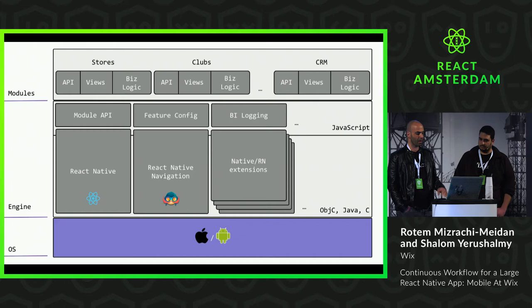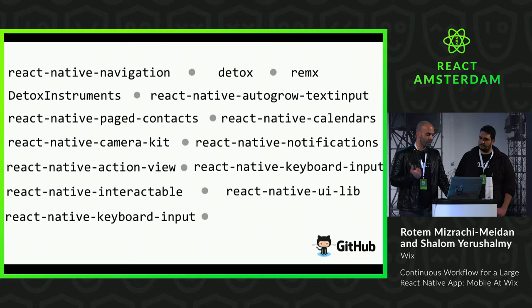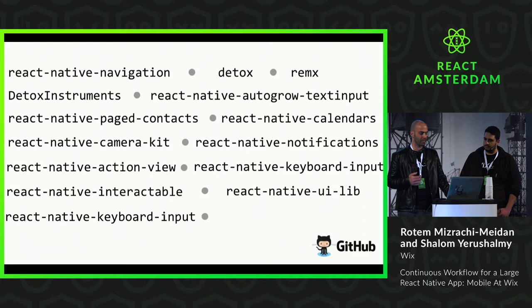Each extension is being developed independently, and most of them are open source projects. You might know a few of them: React Native Navigation, Camera Kit, our keyboard extensions, notifications, UILib, Interactable, Detox, and more. React Native Navigation, for instance, is being treated as a completely independent product. Here you can see React Native Navigation's end-to-end test suite using Detox for both iOS and Android. That's the V2 of React Native Navigation, which will be released very soon, we hope.